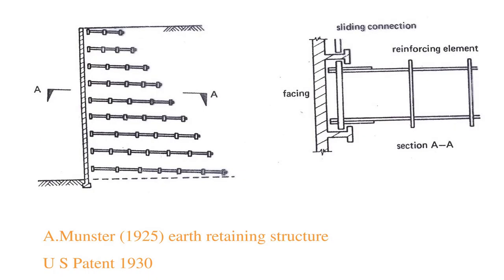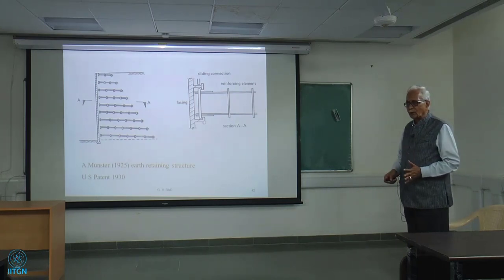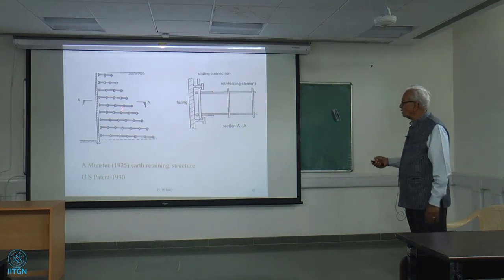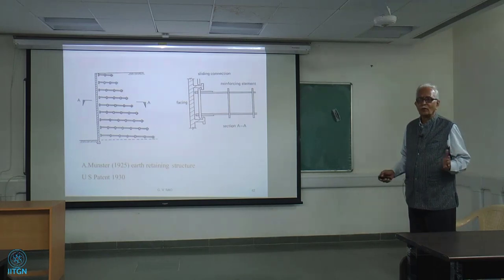Around that same period, there was another patent in the US with a similar arrangement - a ladder kind of arrangement for reinforcement. The concept of geogrid was there in those days. Earlier it was only a tie rod with an anchor, but now it became a ladder arrangement. The ladder was not placed horizontally but with a slight inclination - today we have nailing done with inclination. The reinforcement ladders can move vertically downward because they are not connected rigidly. The panel is fixed, but the reinforcement is allowed to move - as was realized as early as 1930, that this connection would be very critical. That is the beauty of the structure.